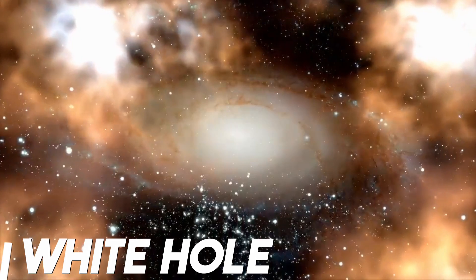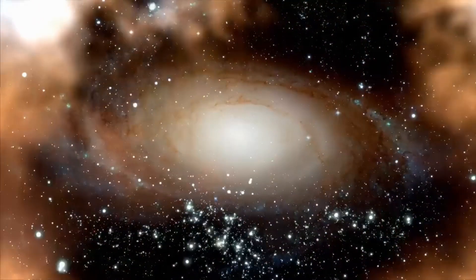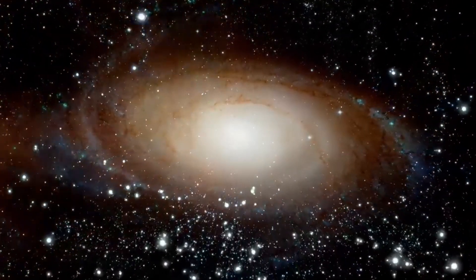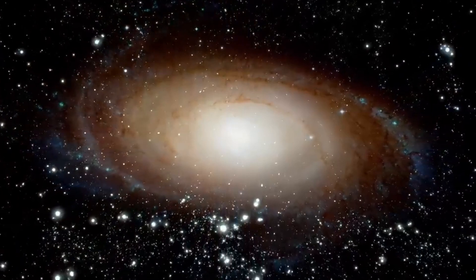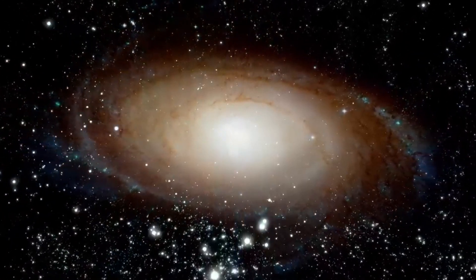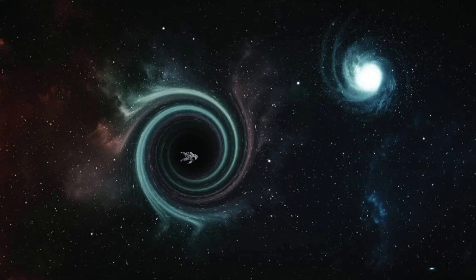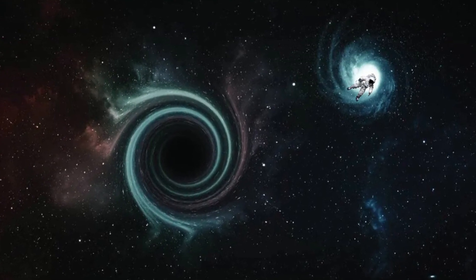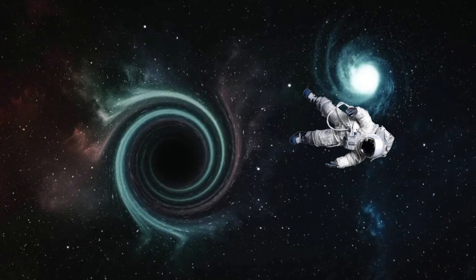White hole. Physicists correctly predicted that a black hole absorbs anything that enters the event horizon. However, we need to find out where these particles go. One widely known theory is that everything entering the black hole passes through and comes out on the other side, called a white hole.